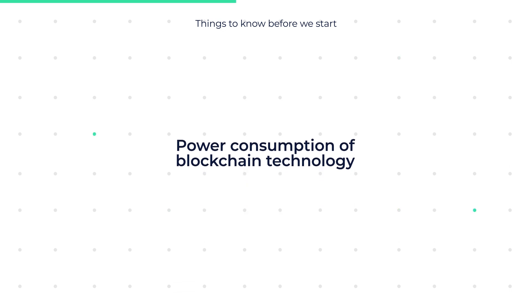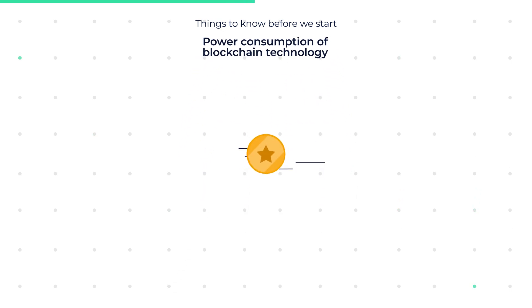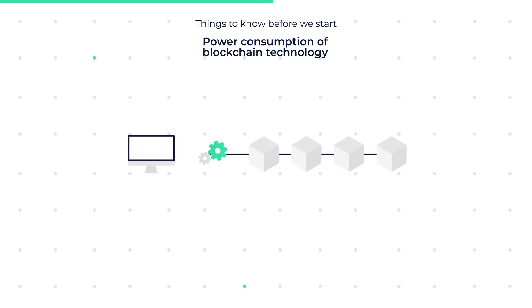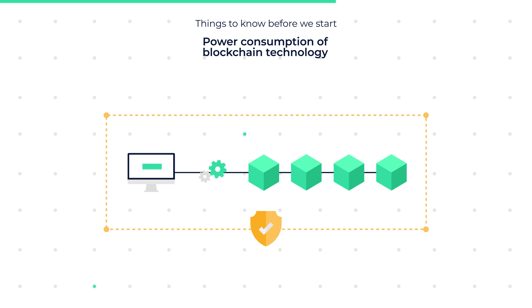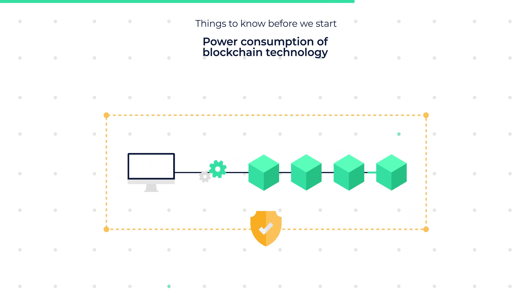Power Consumption of Blockchain Technology. NFT data is stored on the blockchain and through the proof-of-work mechanism, data blocks are checked by miners in order to reach consensus about the integrity of the data. This process is what makes blockchain technology highly secure and decentralized, but the continuous data checks cost computational power.